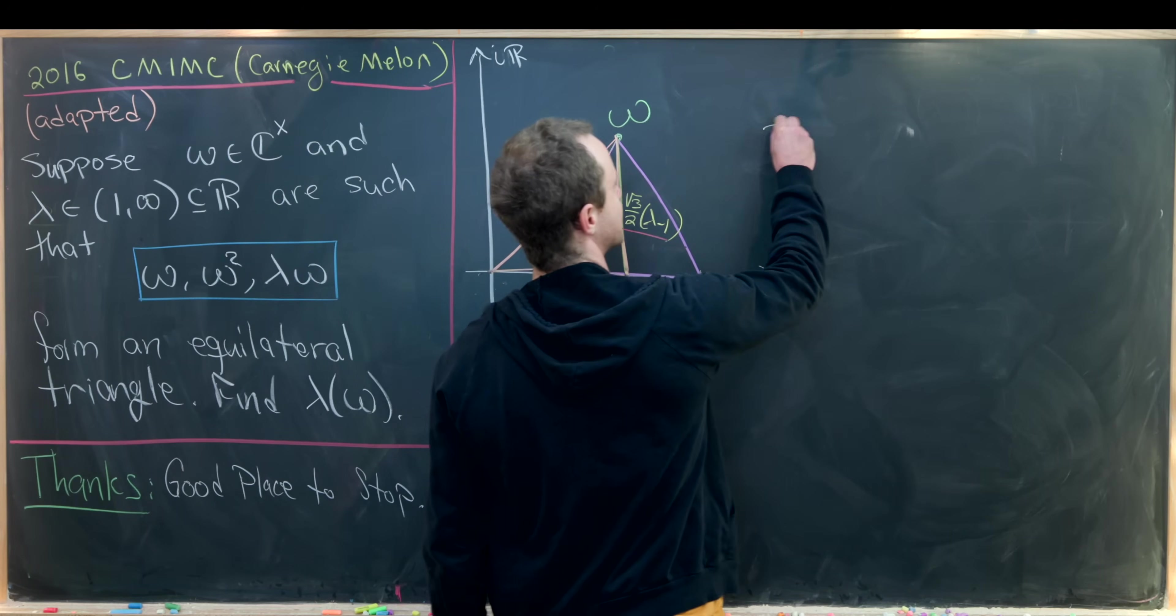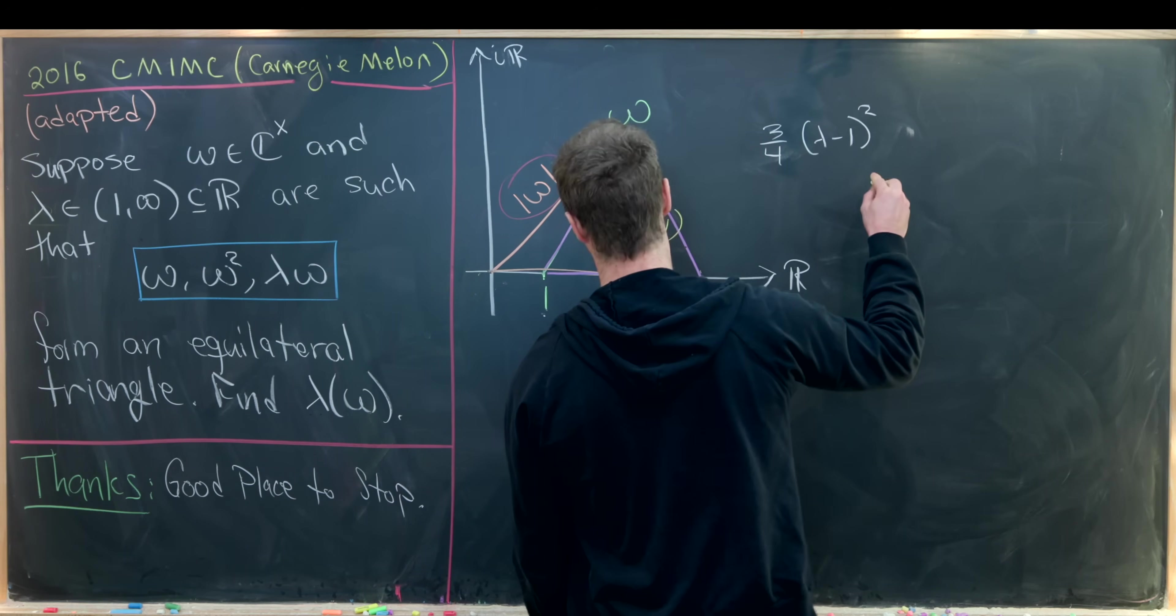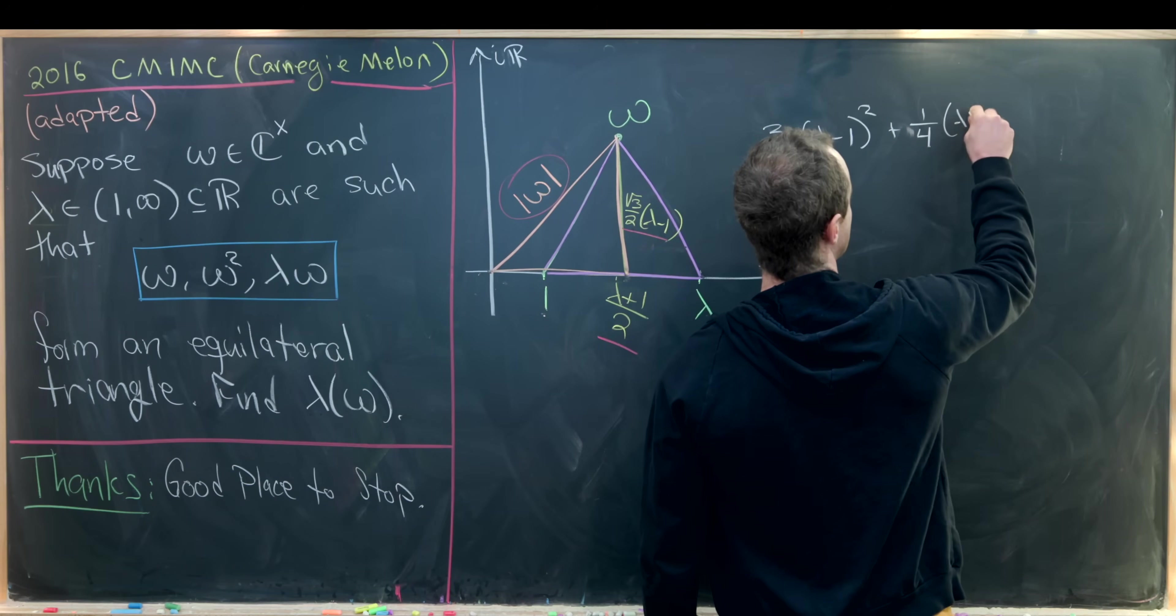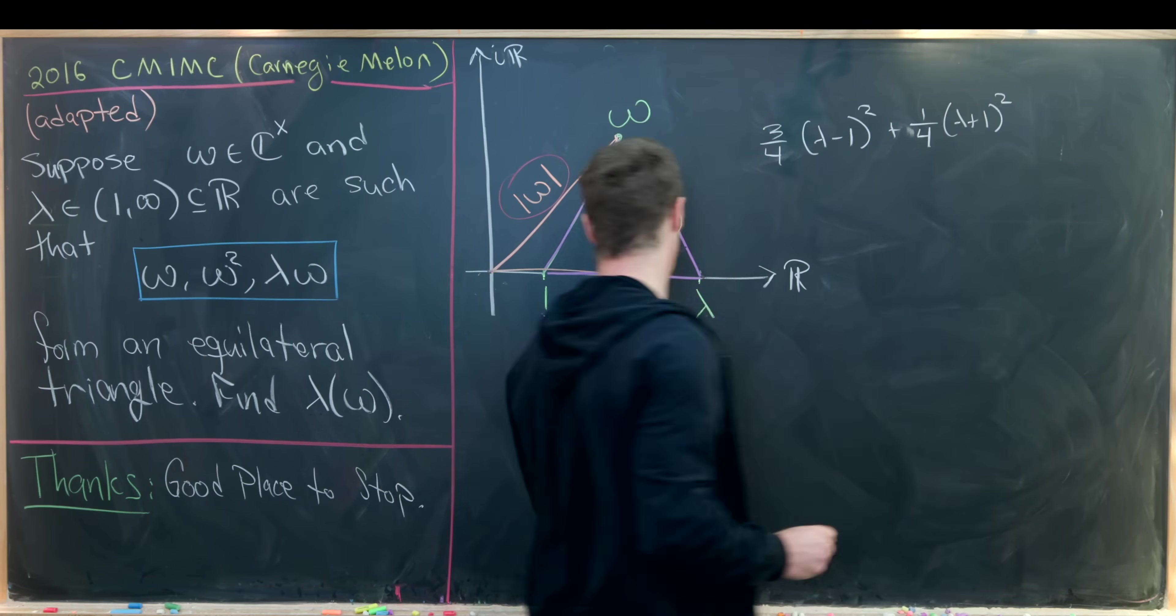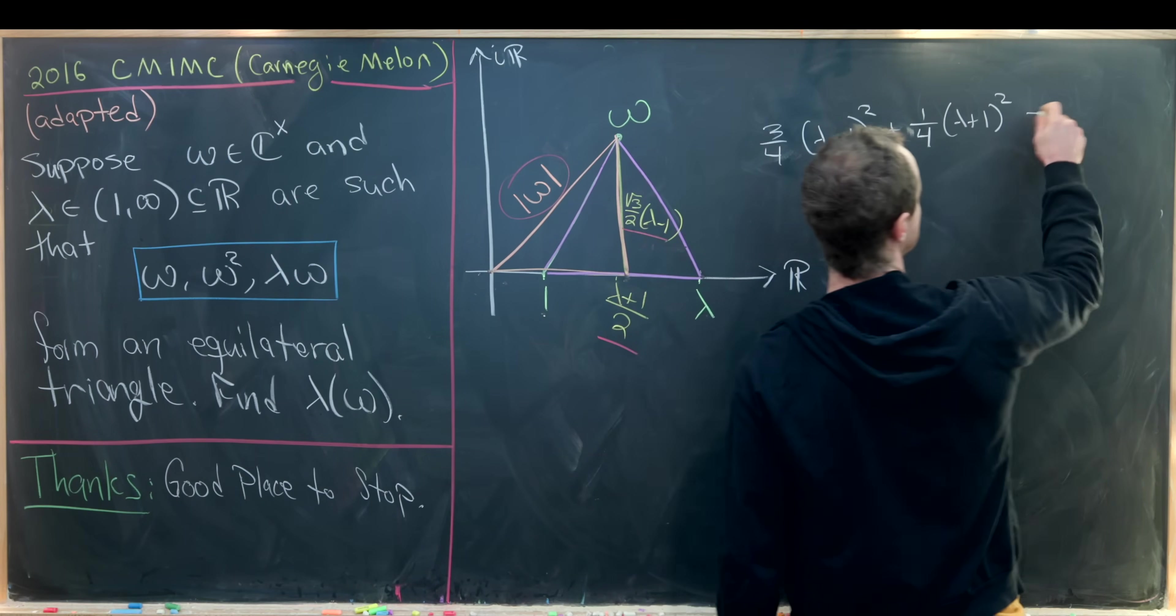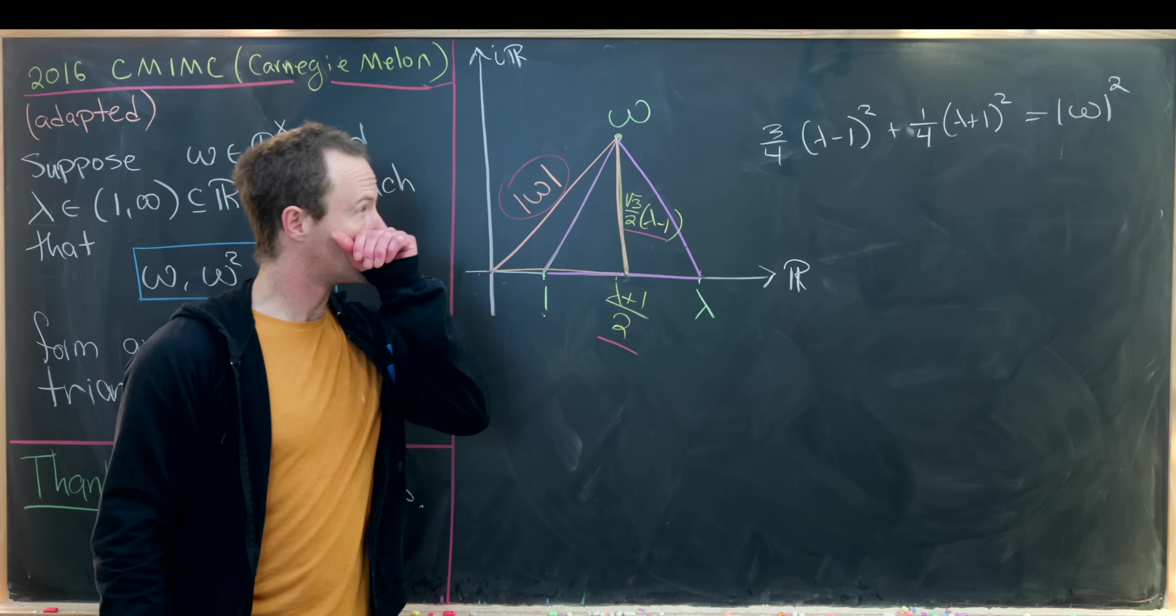Now we've got a nice setup where we can apply the Pythagorean theorem to the triangle with these two side lengths and this guy as the length of the hypotenuse. So that's going to give us 3 over 4 times lambda minus 1 squared plus 1 over 4 times lambda plus 1 squared. So that's from squaring these two side lengths equals the magnitude or the modulus of omega squared.